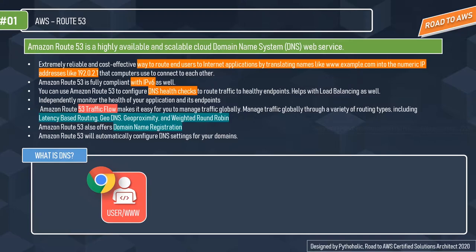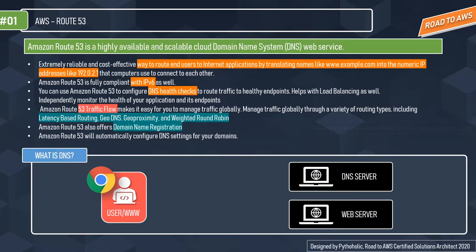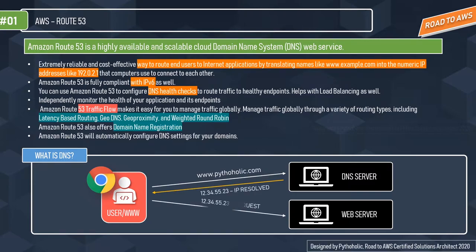Let's suppose a user requests to access pytholic.com in the browser. The first call goes to a DNS server that translates or resolves pytholic.com to a machine-readable IP address and returns the response. Then the client sends the request to the web server with the resolved IP address and gets the content back. In simple terms, DNS creates a mapping of hostname to IP address.